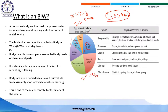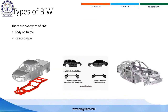BIW is a major contributor to the safety factor in the vehicle. It will be the major safety factor ensuring your security first. Generally, we have two types of BIW: one is body on frame and another is monocoque body.